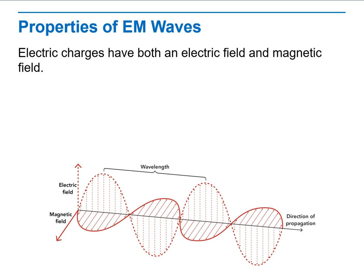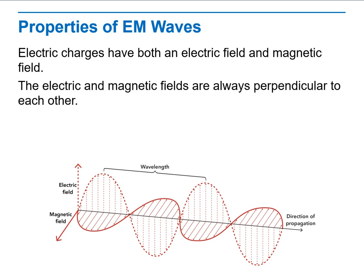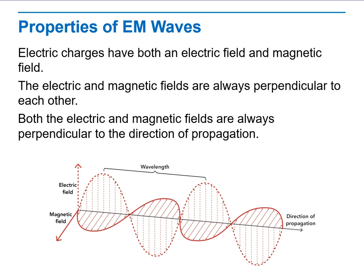Properties of electromagnetic waves: electric charges have both an electric field and a magnetic field. The electric and magnetic fields are always perpendicular to each other. Both of them are always perpendicular to the direction of propagation.